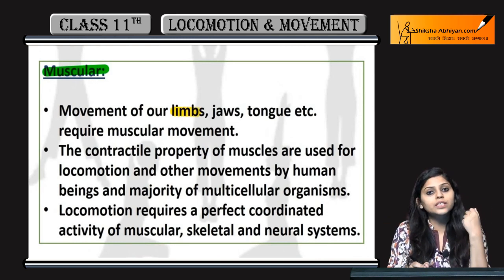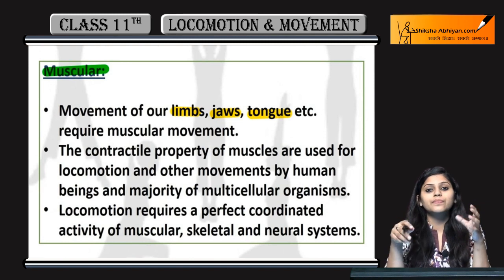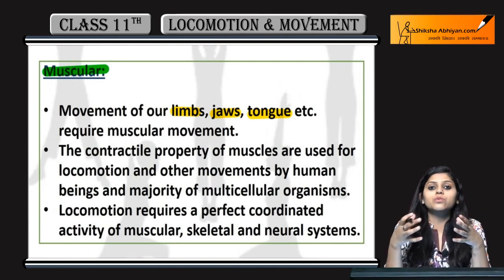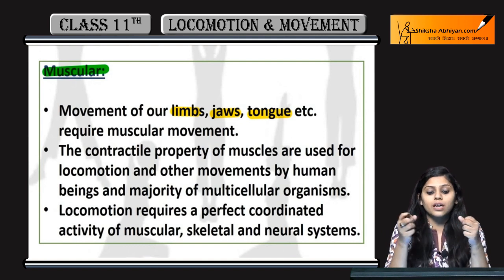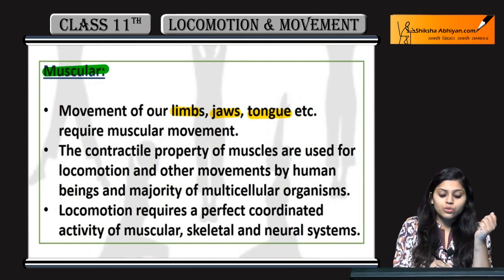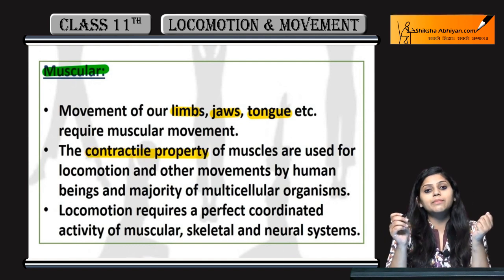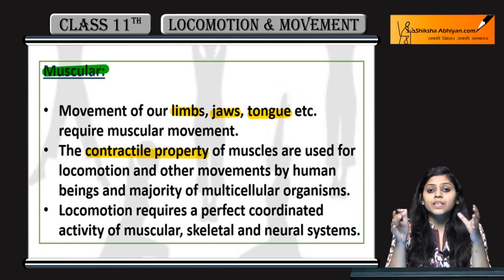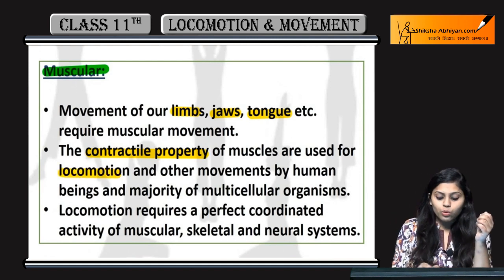Next is muscular movement — yeh muscles ki movement hoti hai. Hamare limbs move karte hain, jaw move karta hai, tongue move kar sakti hai — yeh sab muscular movement hai. Muscles ki property hoti hai contraction ki, toh yeh contractile property muscles ki wajah se movement hoti hai.